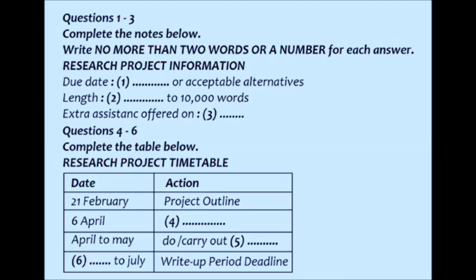I still can't work out what I want to do it on. In that case, you should see your course tutor to agree on your final topic, and you should also be aware that there is special assistance available at the library on library resources if you need help on that. Can I just check on the deadlines for everything? Let me write it on the board. First of all, you've got to work on your basic project outline, and that's due in to your course tutor by 21st of February, which is only two weeks away, so you need to get cracking on that.